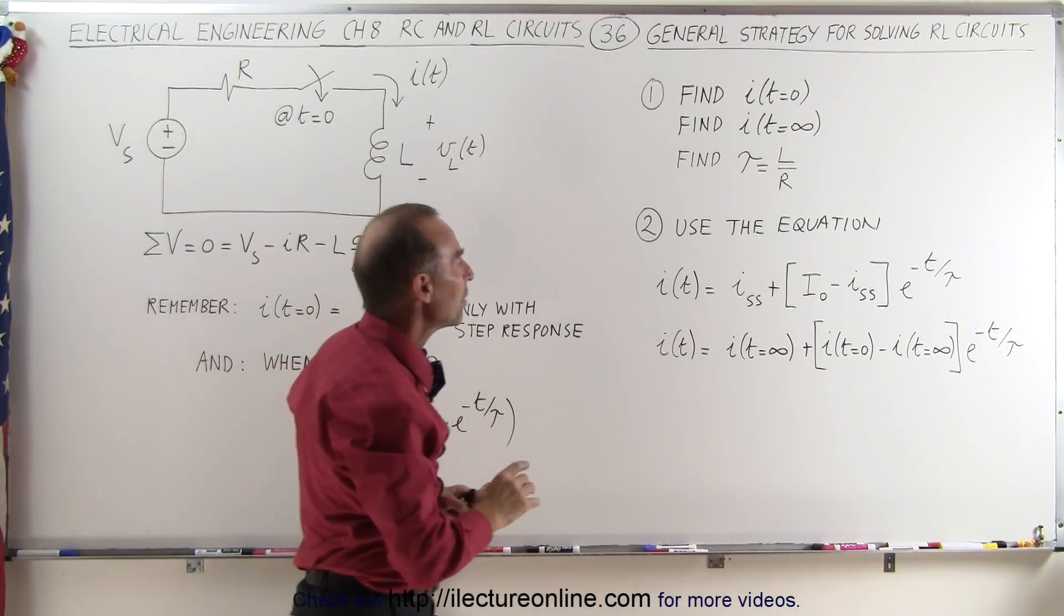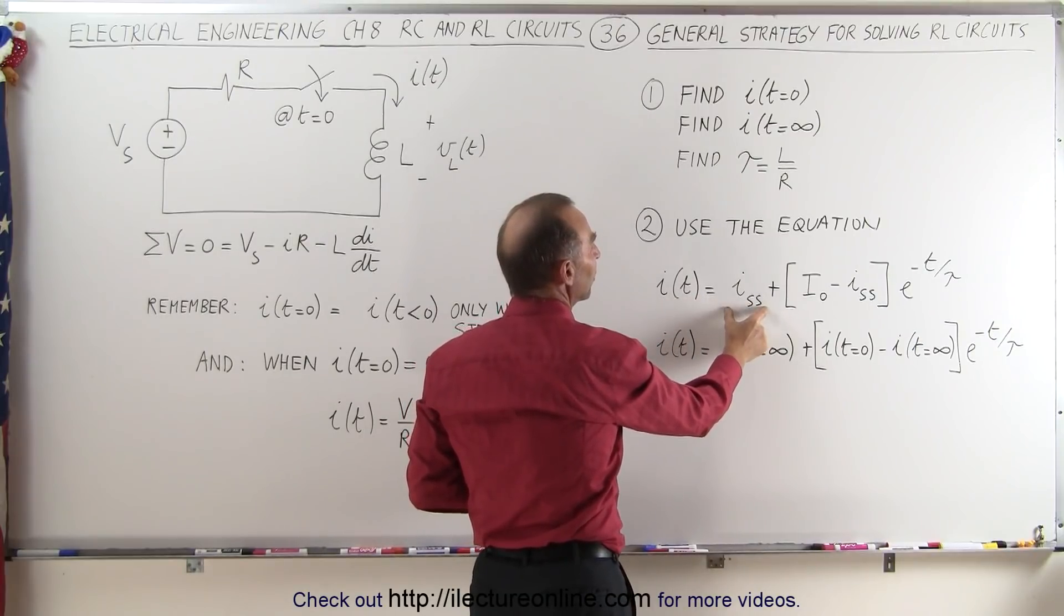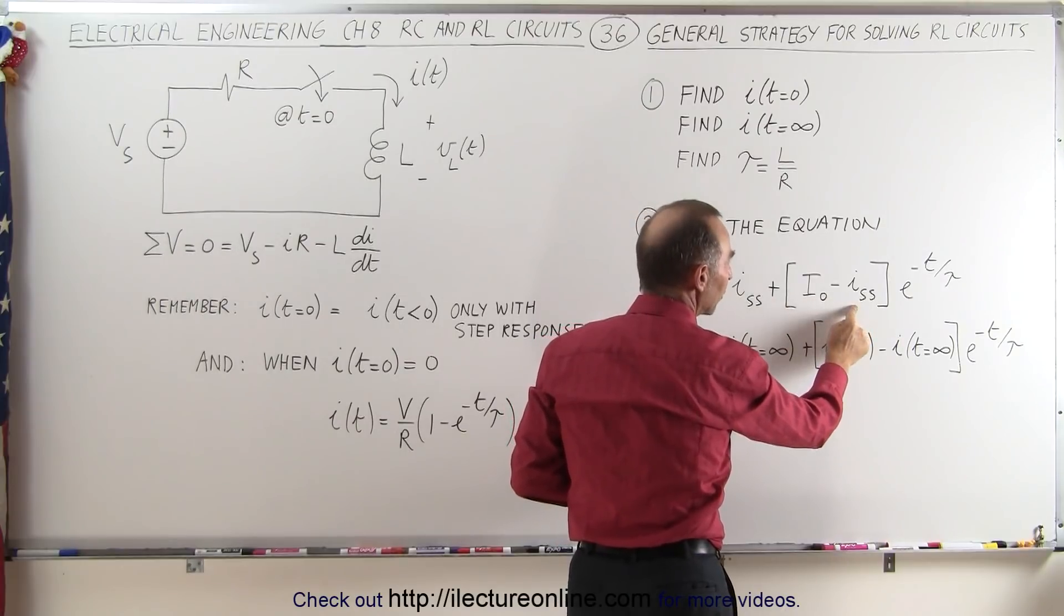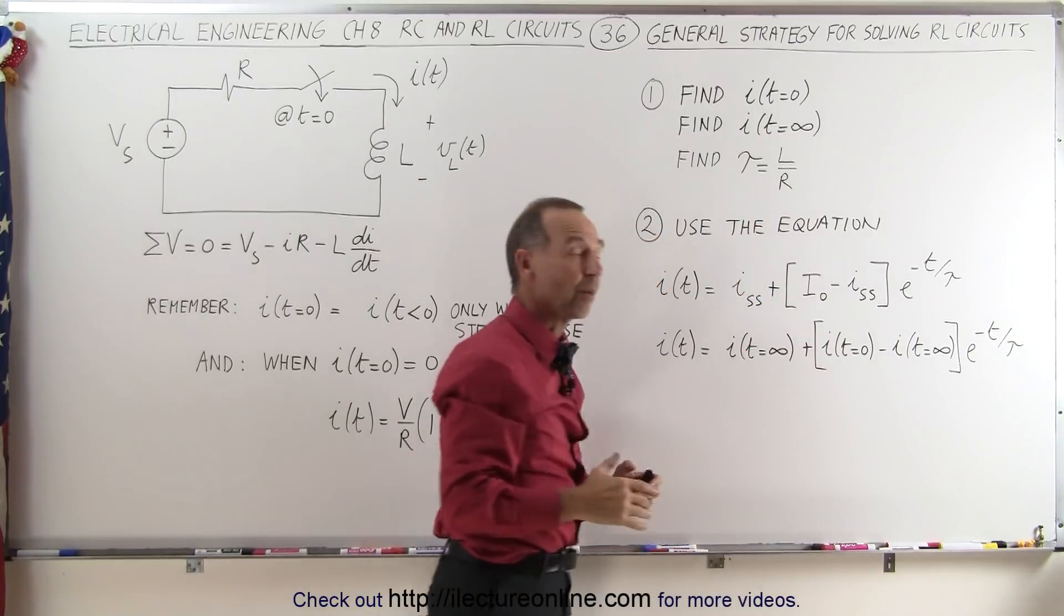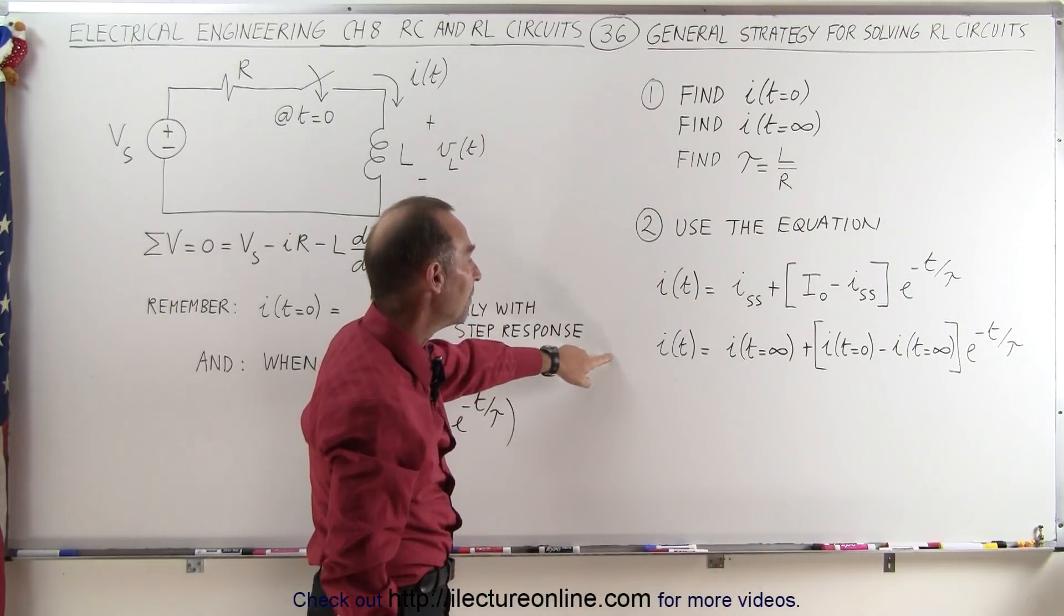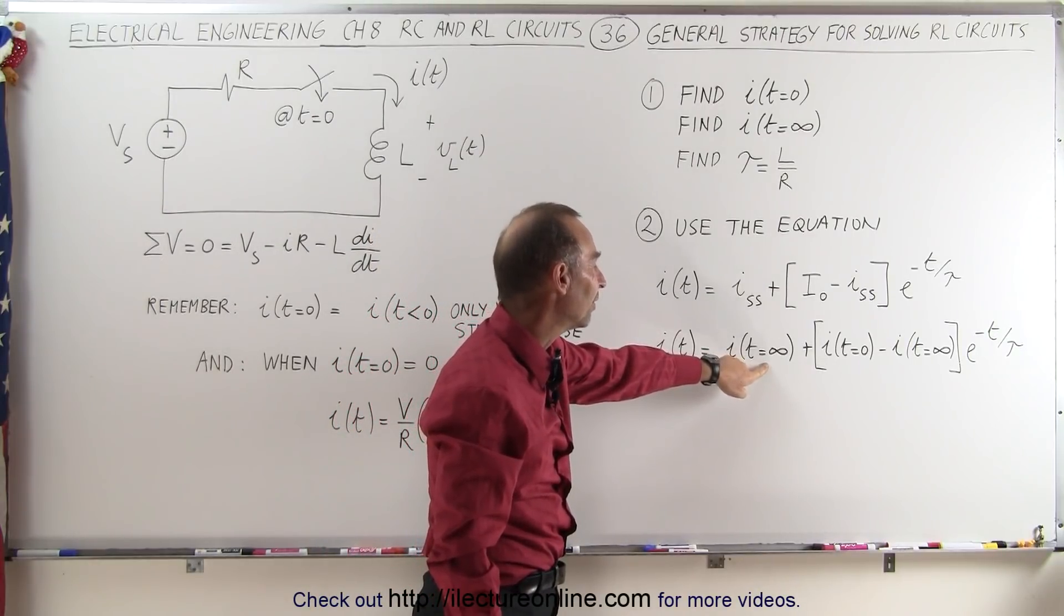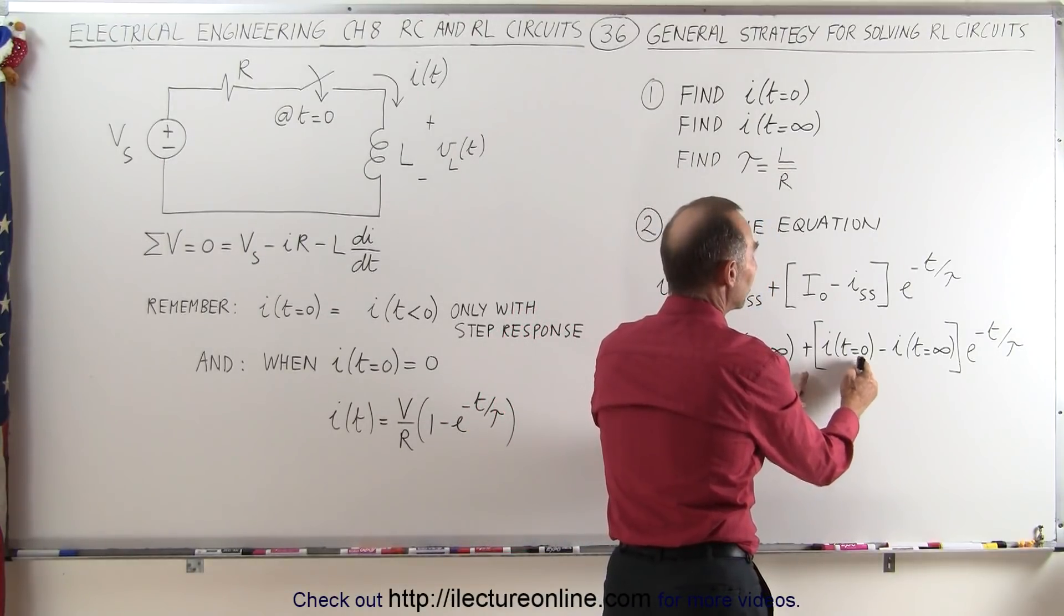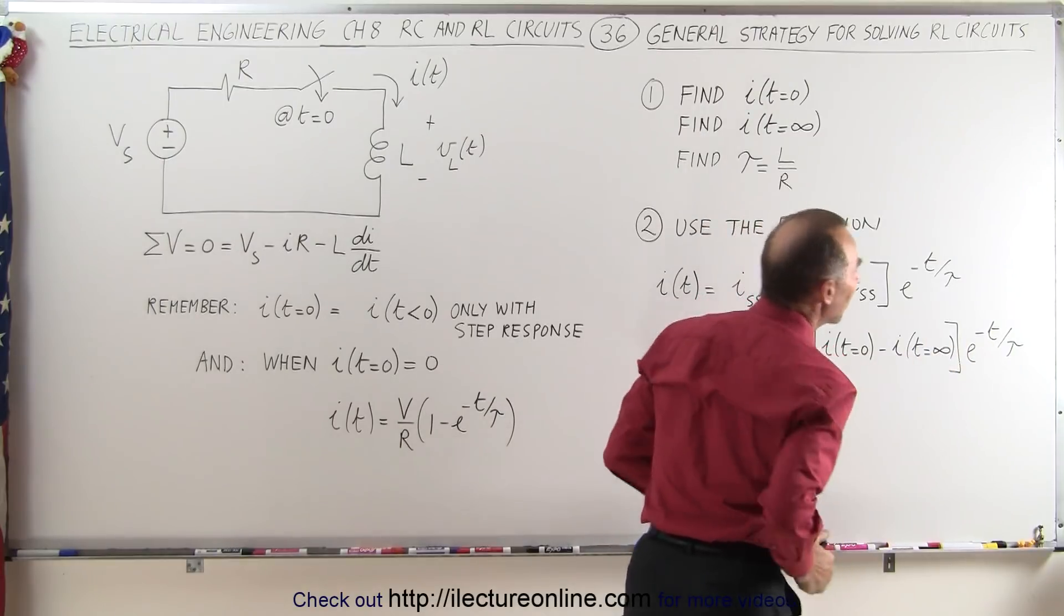And then we go ahead and use the equation where the current as a function of time is equal to the steady state current plus the difference between the initial current and the steady state current times e to the minus t over tau. Again, tau is that time constant. So if we want to write in terms of the current as a function of time, we can say that i(t) is equal to the current when time reaches infinity plus the difference between the current when time is equal to zero and the current when time is equal to infinity times e to the minus t over tau.